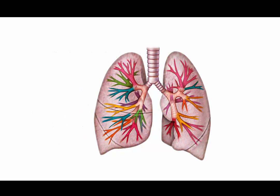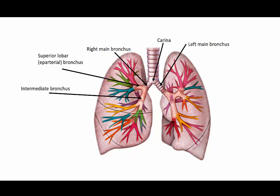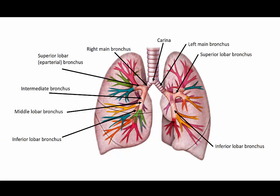The trachea splits at the carina into the right and left main bronchi. The right bronchus is further divided into the superior lobar or eparterial bronchus and intermediate bronchus, then into the middle and inferior lobar bronchi. The left main bronchus divides into superior and inferior lobar bronchi. The superior lobar bronchus then divides into the superior division bronchus and the lingular bronchus.